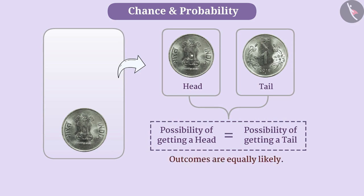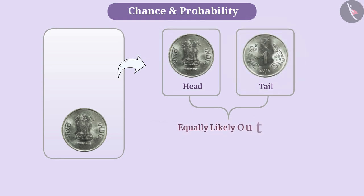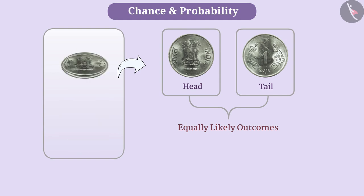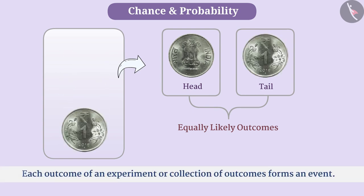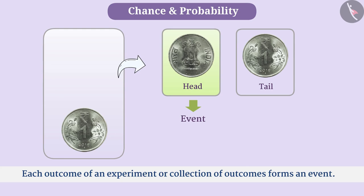Both head and tail are equally likely outcomes. Here we have done an experiment of tossing the coin, the outcome of which can be head or tail. Each outcome of an experiment or a collection of outcomes forms an event. Getting head is one event and similarly, getting tail is also one event.